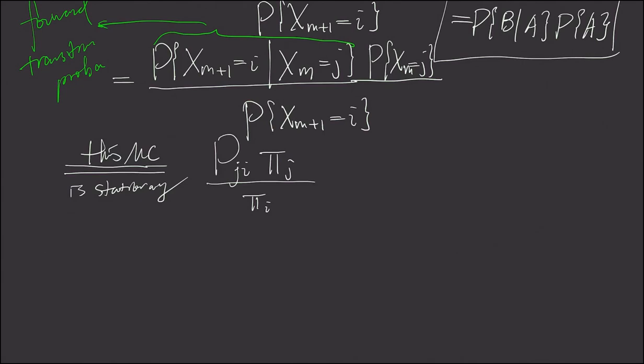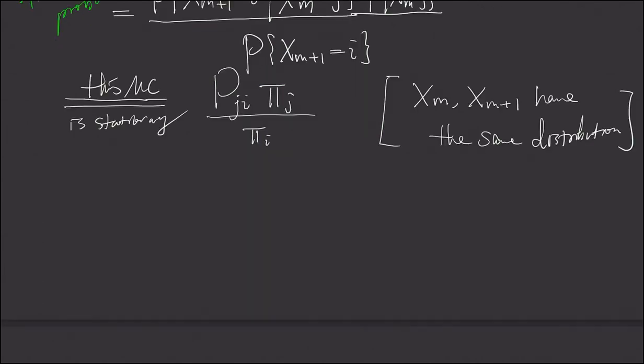So here what we use is x_m and x_m+1, they have the same distribution. As a result, this is our Q_ij.